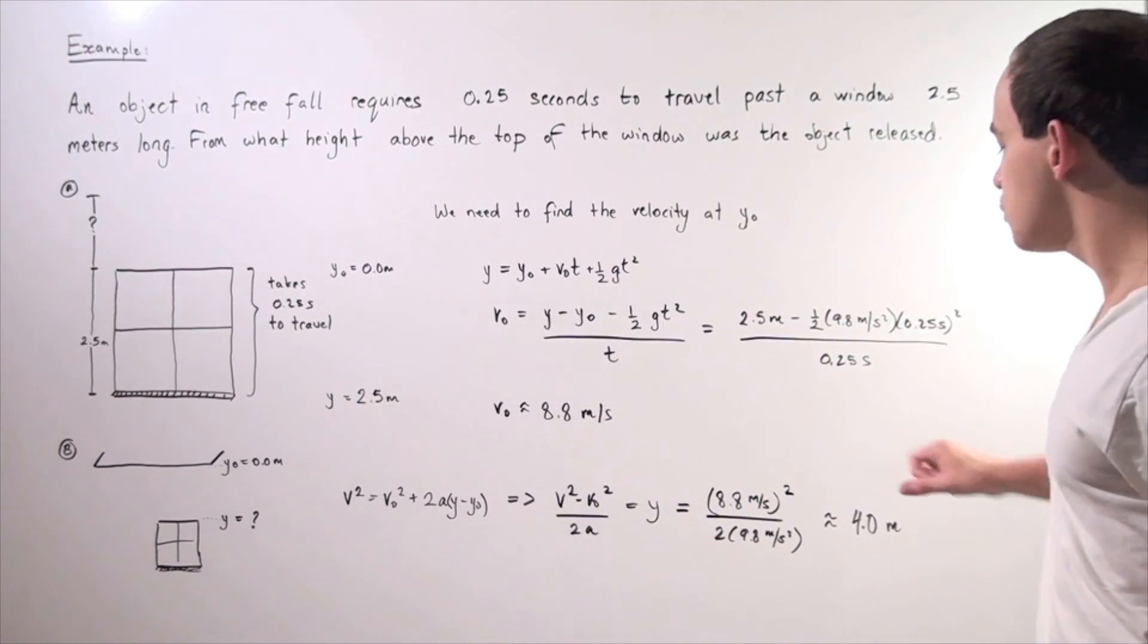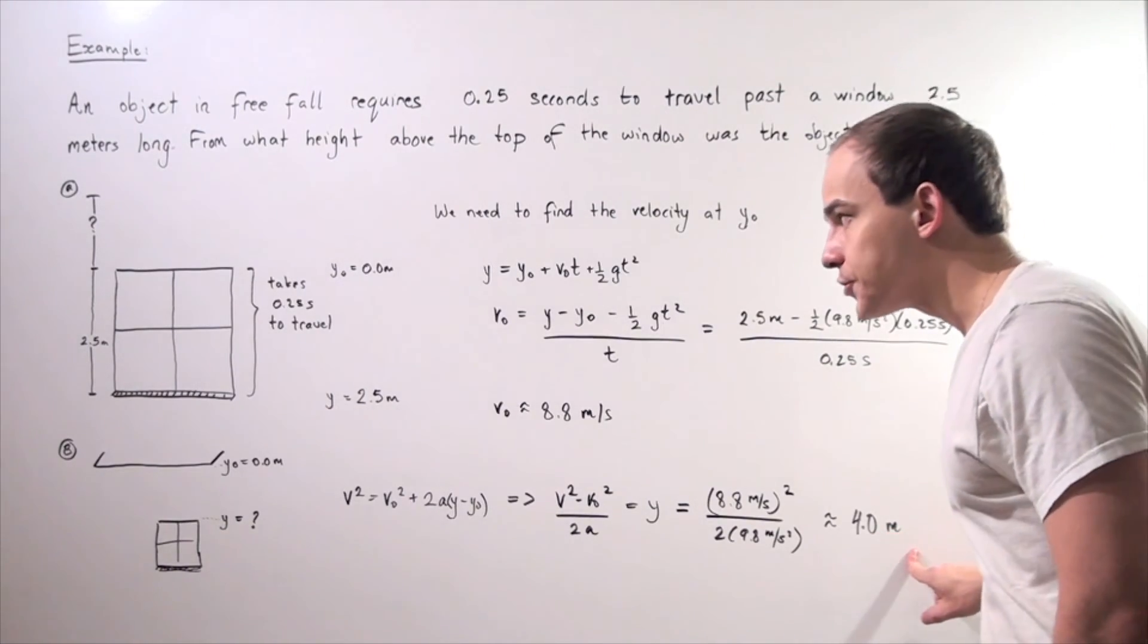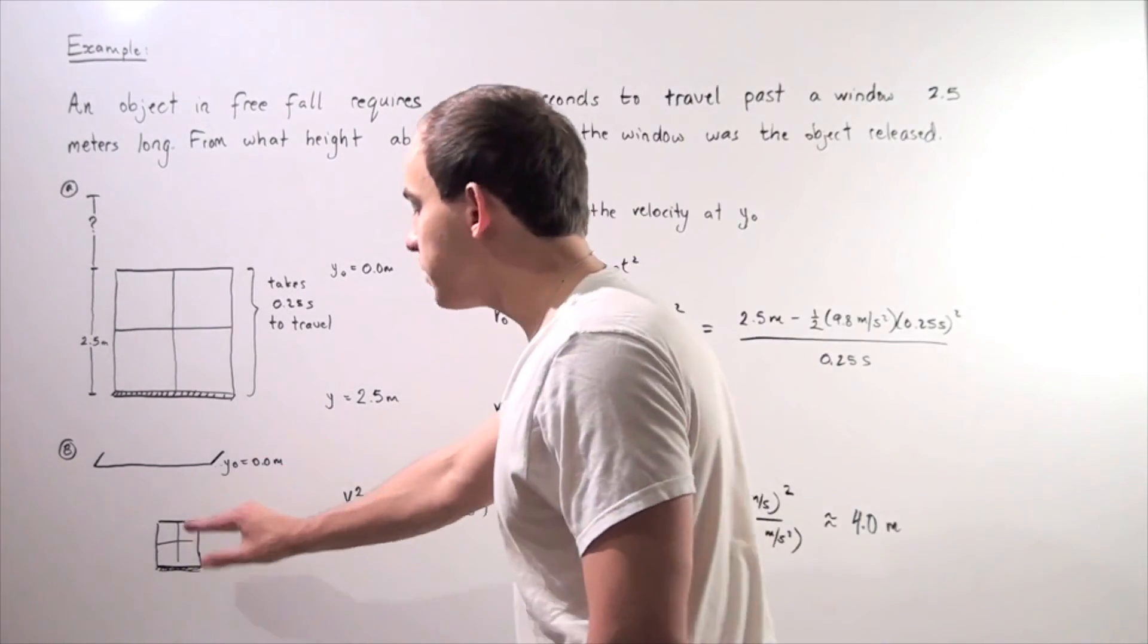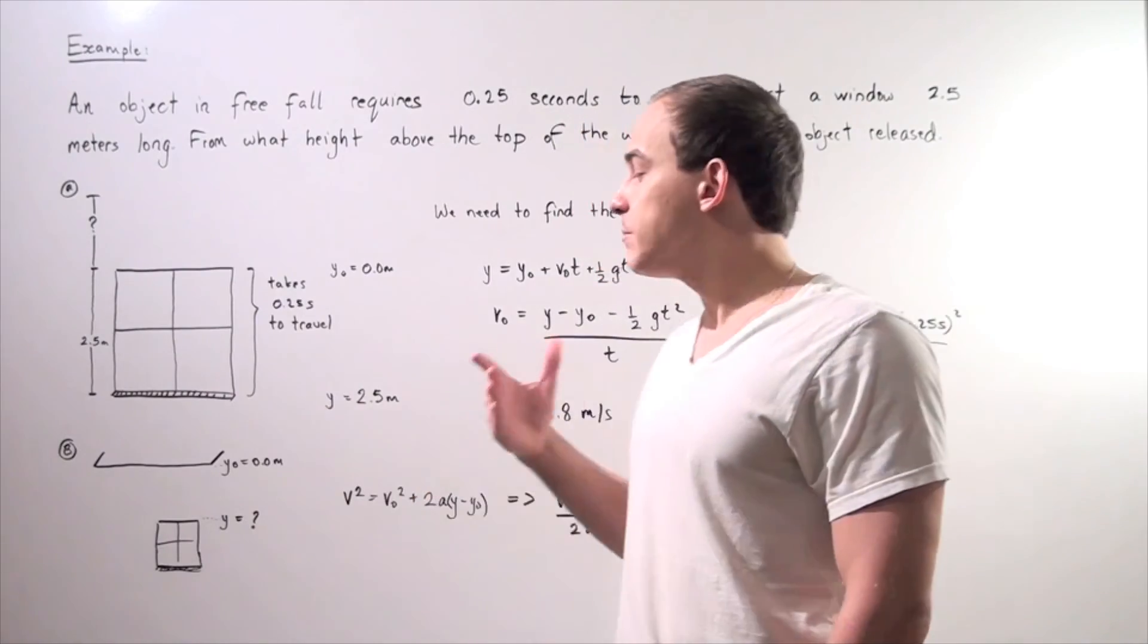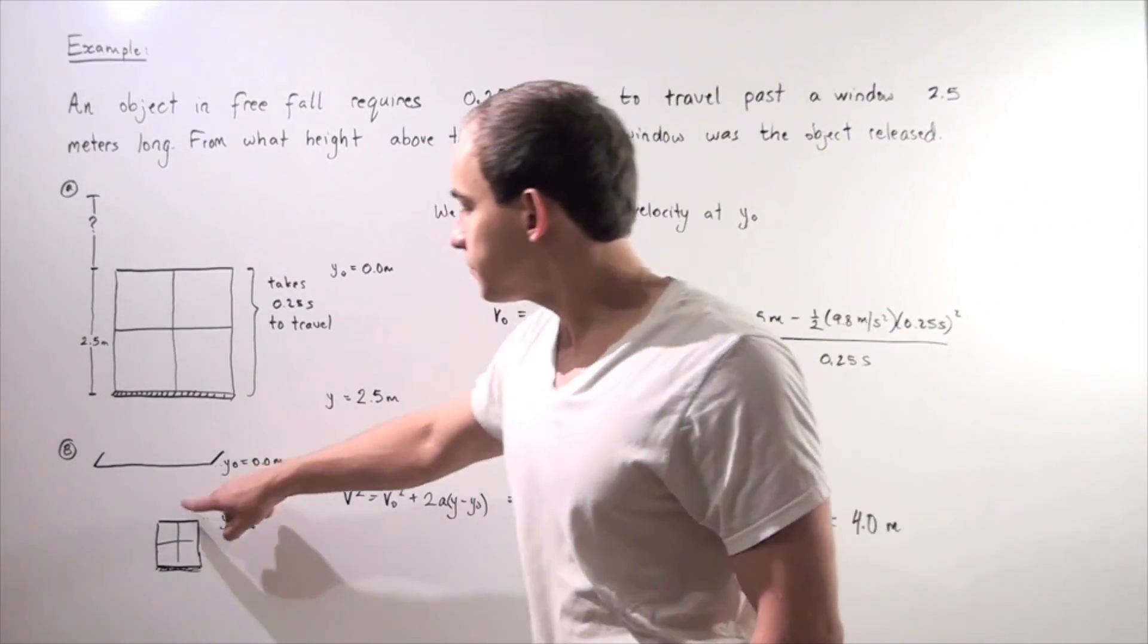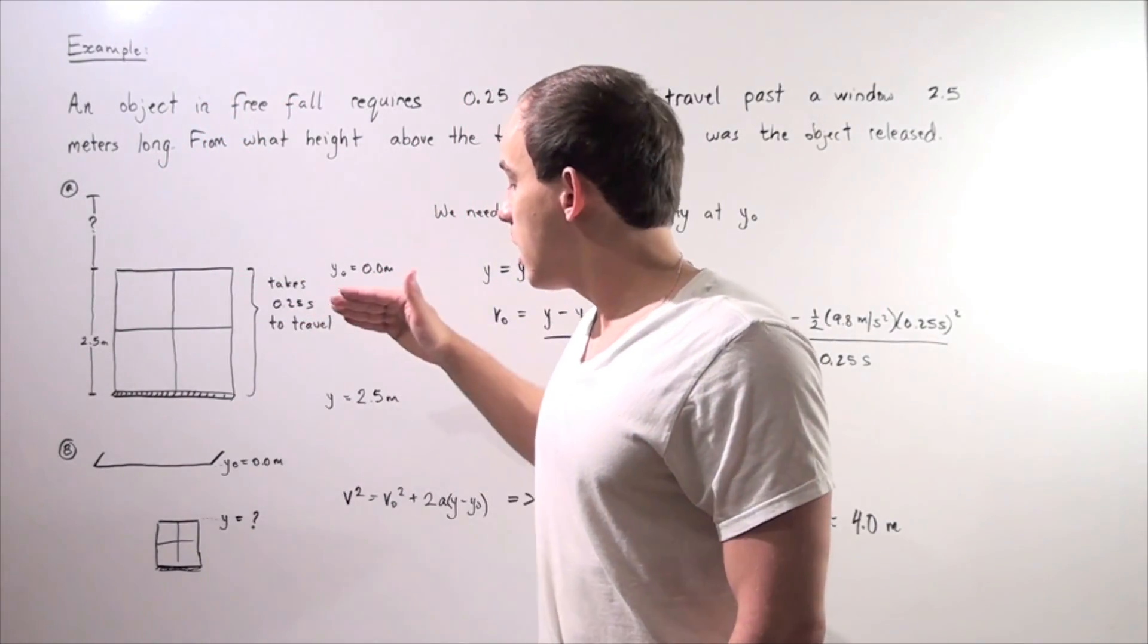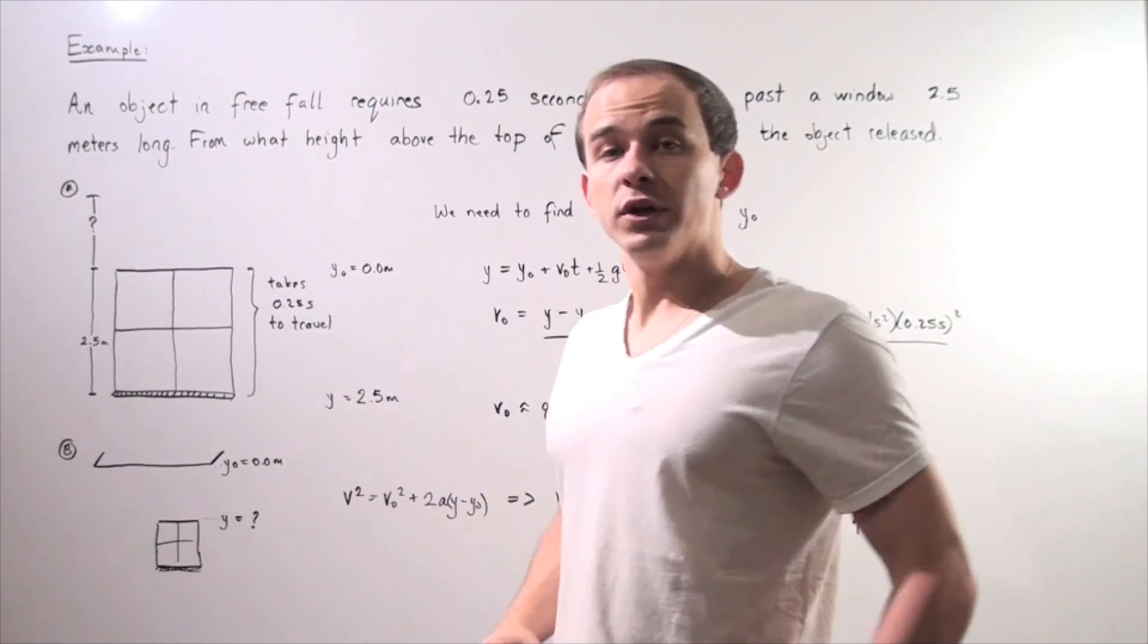We plug in our values and we get approximately 4.0 meters. So our window, the top of the window, is approximately 4.0 meters in height. So our object was released 4 meters above our window.